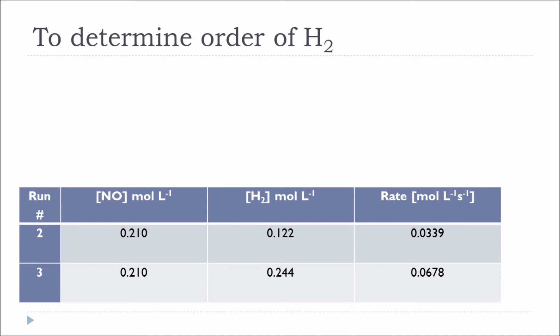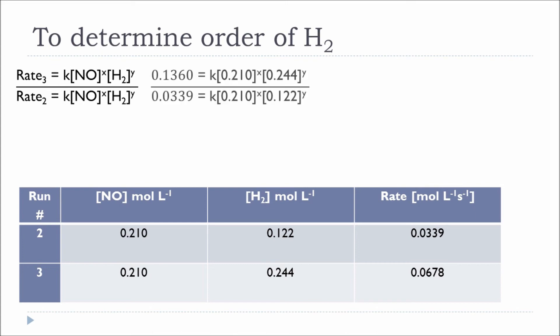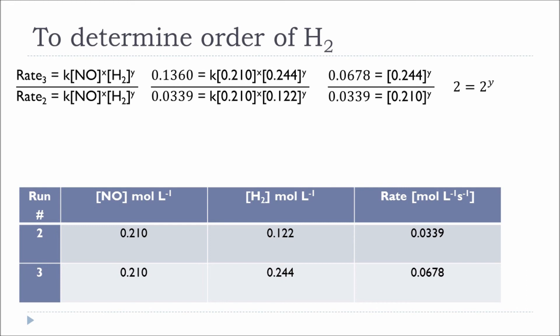Applying the same ratio method: we take rate 3 over rate 2. The NO concentrations are the same and cancel out. The ratio of rates is 0.0678 / 0.0339 = 2, and the ratio of H₂ concentrations is 0.244 / 0.122 = 2. So 2 = 2^y, meaning y = 1. Using logarithms: log 2 = y log 2, confirming y = 1. The order of hydrogen is 1.